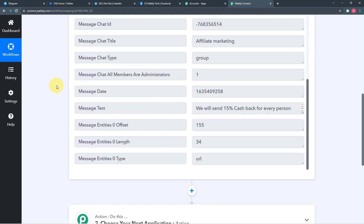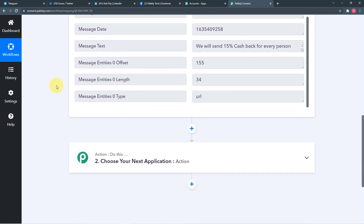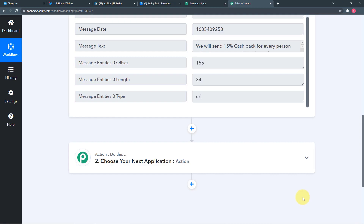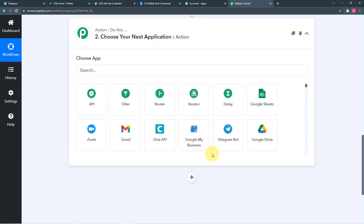Our first two steps are completed — now it's time for the next step: send the same data to Facebook, Twitter, and LinkedIn. The data captured in Pabbly Connect from the Telegram group will be sent to the Facebook page, Twitter handle, and LinkedIn account. In Pabbly Connect, click on the action window and attach our Facebook page first — from Choose App, select Facebook Pages.